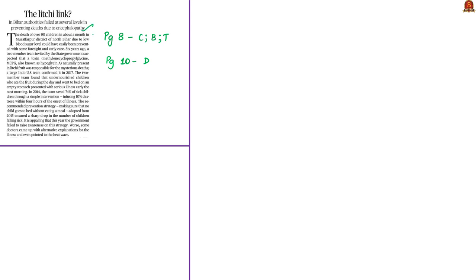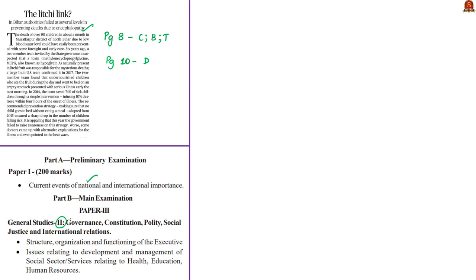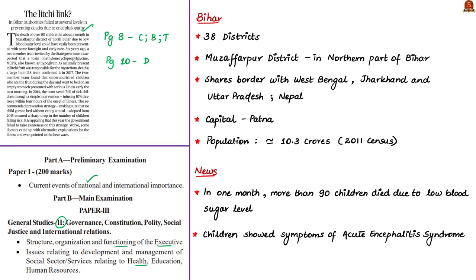The analysis will be relevant in your prelims preparation under current events of national importance, and in mains preparation in General Studies Paper 2 under functioning of the executive and issues relating to health. There are 38 districts in Bihar, one of which is Muzaffarpur district in the northern part of Bihar. Bihar shares borders with West Bengal, Jharkhand, Uttar Pradesh and the neighboring country Nepal. The capital of Bihar is Patna and Bihar has a population of around 10.3 crores according to the 2011 census.